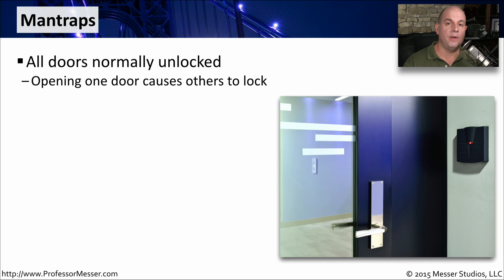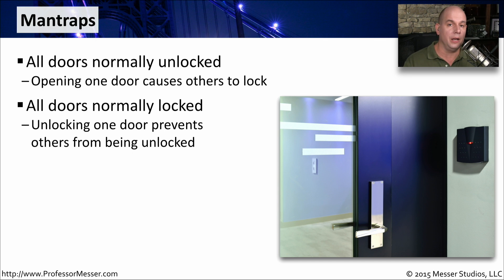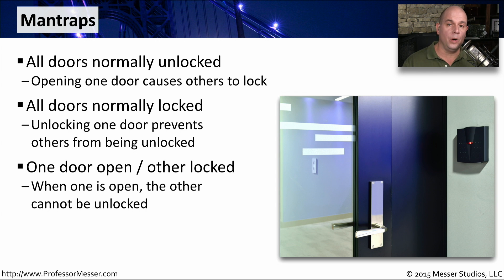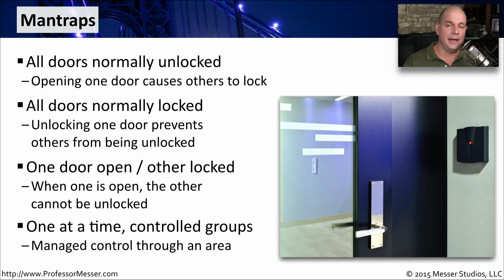One type of man trap might have all of the doors unlocked so you can enter from either side. But once you open a door, the other side will be locked. So as long as that other door is open, all of the other doors in the man trap are going to be closed and locked. Some man traps start with all of the doors locked, and when you unlock a door, it prevents any of the other doors from being unlocked, which performs the same function. All of these types of man traps are effectively doing the same thing — stopping someone in the middle of the room and having you close the door behind you before you can proceed. The man trap is designed to limit the number of people that can pass through a particular area at one time.